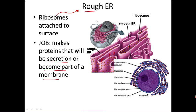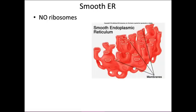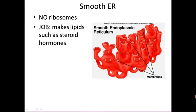The smooth ER doesn't have any ribosomes, and its job is to make lipids like steroid hormones — for example testosterone and estrogen. This is minimal in most cells. Most cells don't have a lot of smooth ER, except those cells involved in making those hormones.